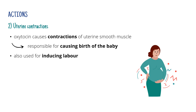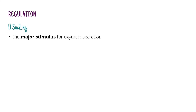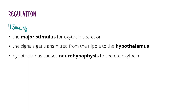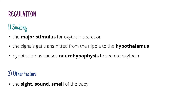Now let's look at the way oxytocin is regulated. The major stimulus for oxytocin secretion is suckling. When the baby suckles, it stimulates sensory receptors in the nipple, the signal gets transmitted to the hypothalamus, and the hypothalamus causes the neurohypophysis to secrete the hormone. However, there are also other factors that cause oxytocin secretion: the sight, sound, or smell of the baby, or even the dilation of the cervix during labor or orgasm.